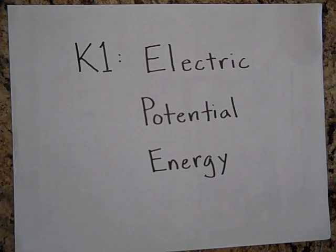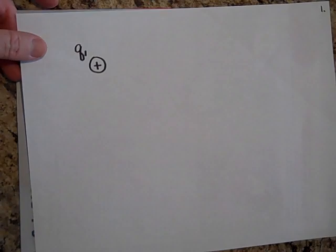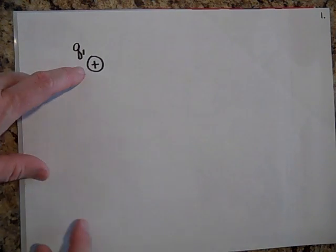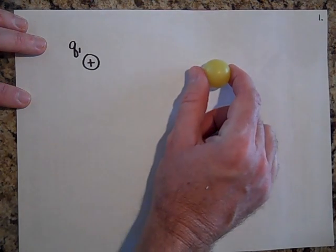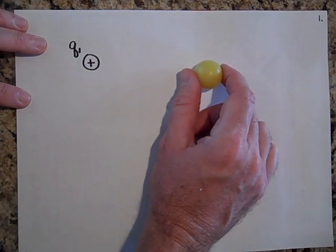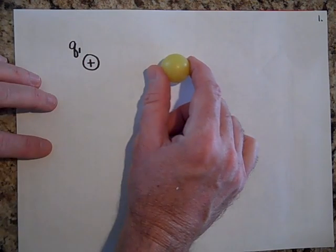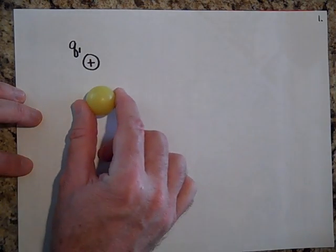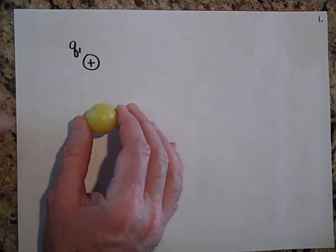I'd like to tell you about electric potential energy and why you have electric potential energy in the first place. Let's look at a point charge — here's a point charge Q1. It's positive and it's fixed there, not allowed to move. There's no potential energy in the system yet, but if I bring another positive charge here, the closer it gets, the more it's propelled. So when I let go, it flies away — that's potential energy. The system has potential energy.